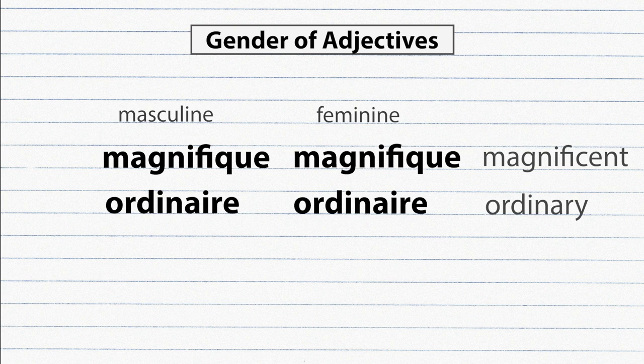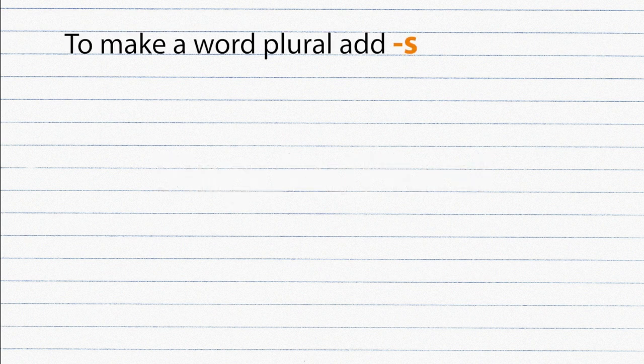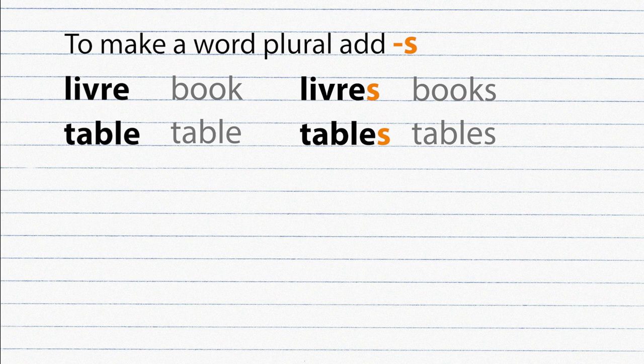Singular and plural. To make a word plural we usually add S at the end. Notice that this S is silent in speech. Livre, livres. Table, tables.